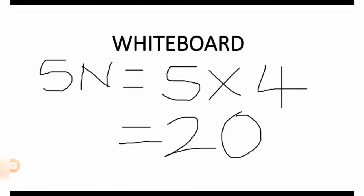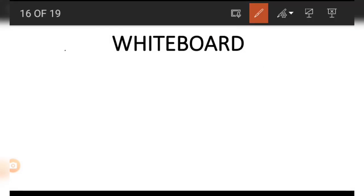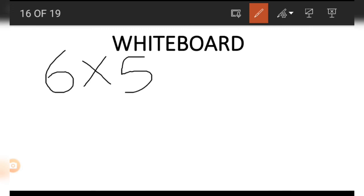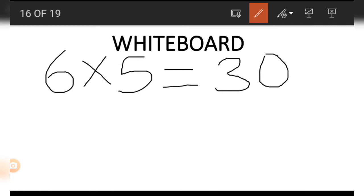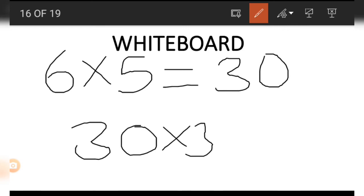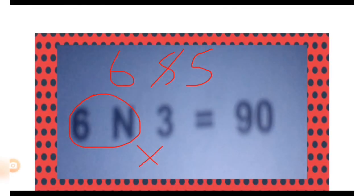For the second picture we have 6 and 3. The 6n represents two numbers: 6 and 5, because 5 is 6 minus 1. So 6 times 5 equals 30. However, after the 6n there is a 3, meaning we multiply this result by 3: 30 times 3 equals 90. This is how we solve this problem.